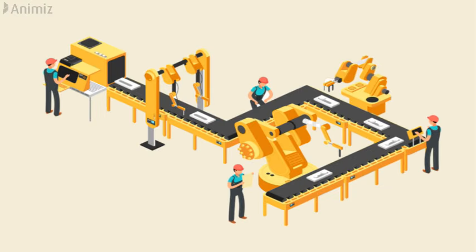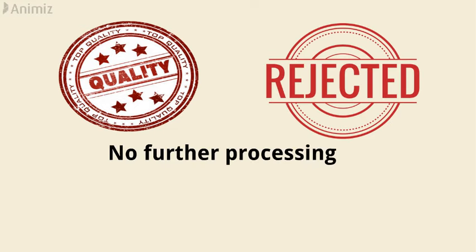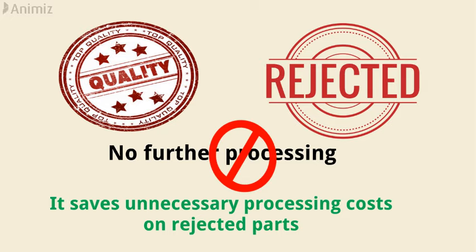Inspection and quality control ensures the standard quality by checking the product during manufacturing at different stages. If the product is not able to meet the desired quality, the product will be rejected and there will be no further process on that unit. It saves unnecessary processing costs on rejected parts.